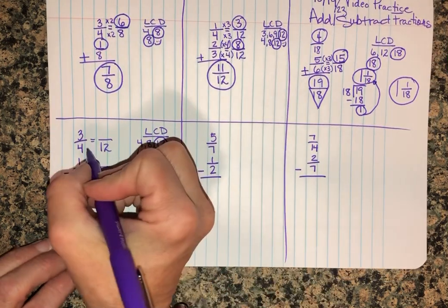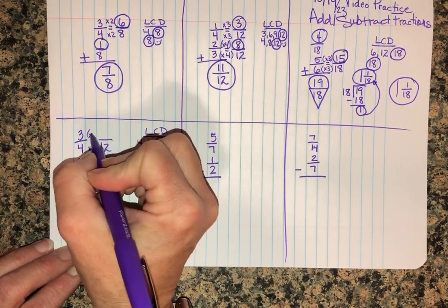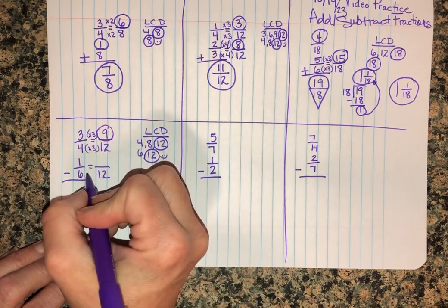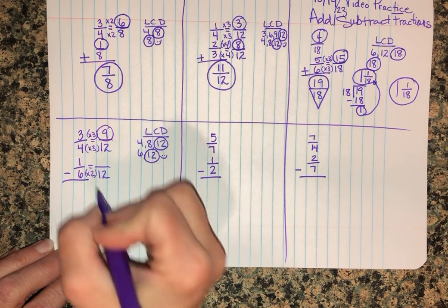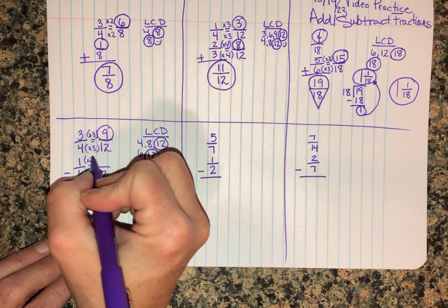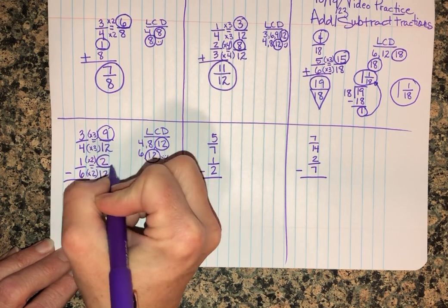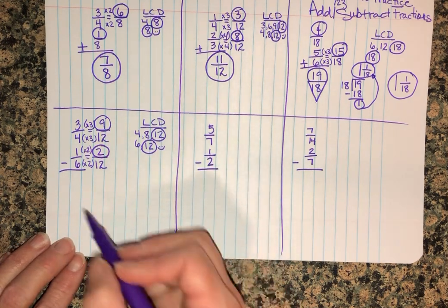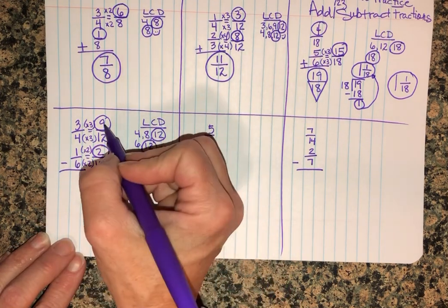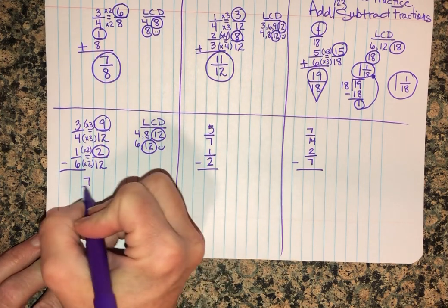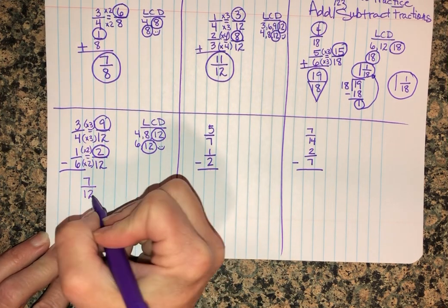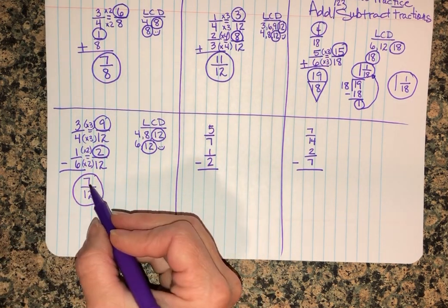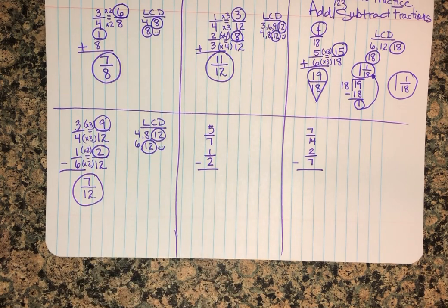When I do that, four times three is twelve, three times three is nine. Six times two is twelve, one times two is two. And this is where I have kids adding up nine plus two - be careful, pay attention. You're doing nine minus two to get seven-twelfths. Always ask yourself can I simplify? In this case, nope. I've got a prime number of seven here and seven and twelve have nothing in common.